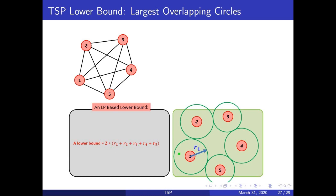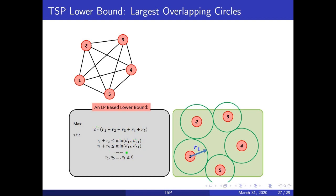That lower bound will be two times the sum of all radii. This is the formulation that will help us in obtaining the maximum value for the lower bound. It is a simple linear program — the variables are all non-negative, and we have all linear constraints. The right-hand side in each of these constraints is a constant value. This method will give you a lower bound for the TSP problem.